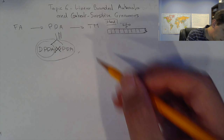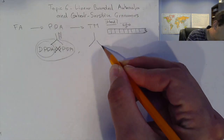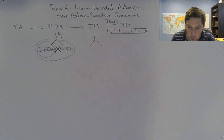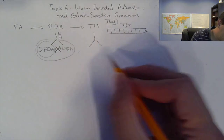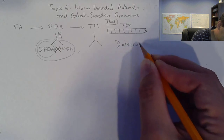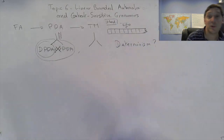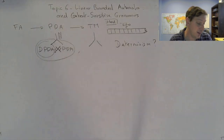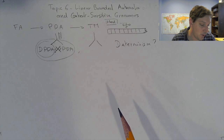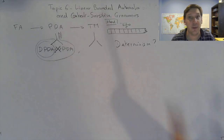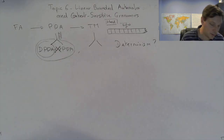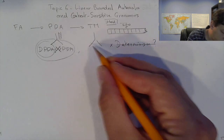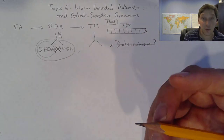For a Turing machine, we can ask the same question: is there a way to divide a Turing machine into a subset? We could look at determinism, but we saw last time that determinism or non-determinism doesn't change anything for Turing machines — a deterministic and non-deterministic Turing machine have the same computational power. So determinism is not an option for restricting a Turing machine.